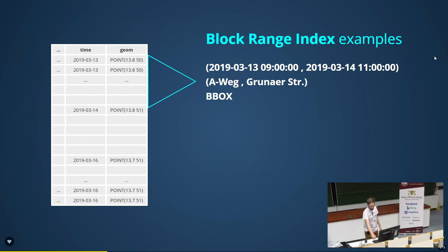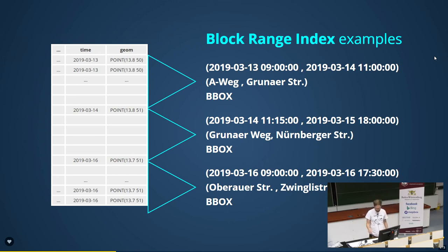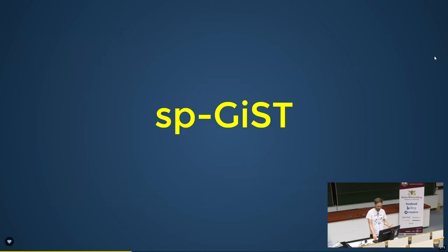For spatial data, the BRIN index stores the bounding box of all features in each block area. Going back to a point example — 1,000 randomly generated points connected by a line string — you can see they are not sorted at all, so a BRIN index would not be beneficial. What you can do in Postgres is order your query result by the geometry column, which applies a Morton curve, ensuring things that are close in reality are also close in your result set.